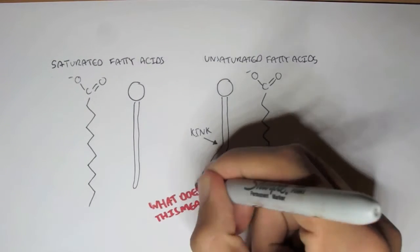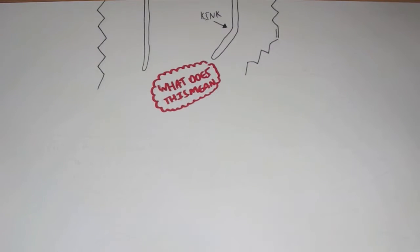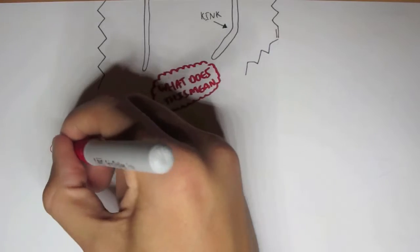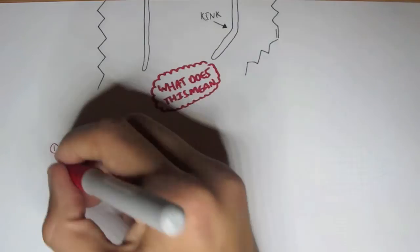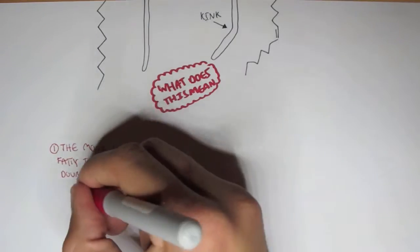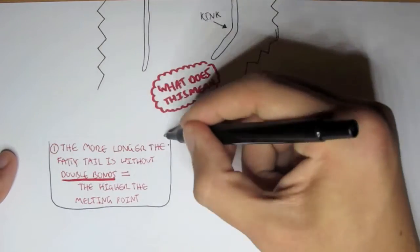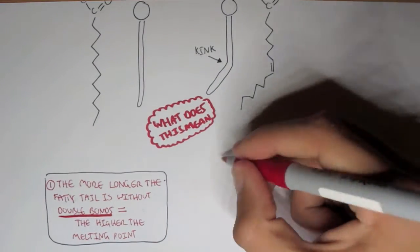So what does this mean? Well, it means two things. The more longer the fatty tail is without a double bond, the higher the melting point will be. So if it's saturated fatty acids, the longer it is, the higher the melting point.